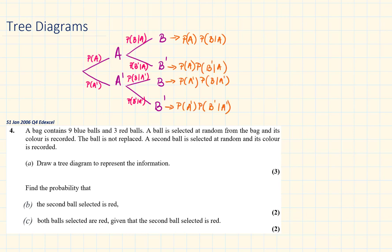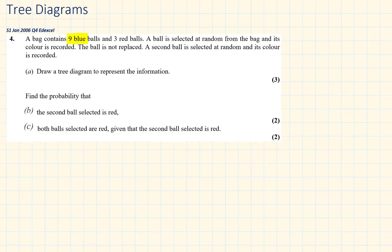Let's look at an example question. A bag contains 9 blue balls and 3 red balls. A ball is selected at random from the bag and its color is recorded. The ball is not replaced. A second ball is selected at random and its color is recorded. Draw a tree diagram to represent this information. The keyword here is 'not replaced', so we are talking about conditional probabilities.